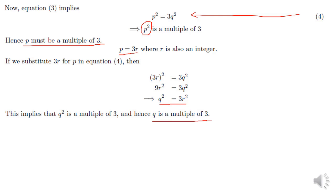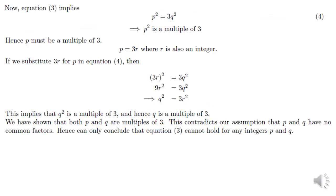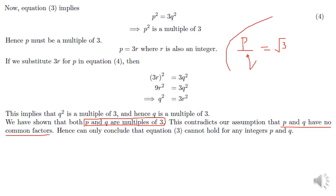We got that P is a multiple of 3, and now Q is also a multiple of 3. So both P and Q are multiples of 3. But initially we assumed that P and Q have no common factors. Now we find that P and Q have 3 as a common factor, which is a contradiction. This contradiction arose because we assumed root 3 is rational. Hence we can say that root 3 is irrational. This proves the first part of the question.